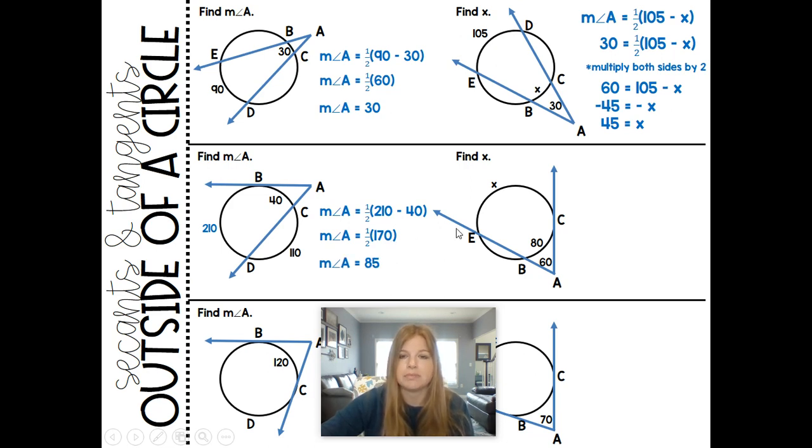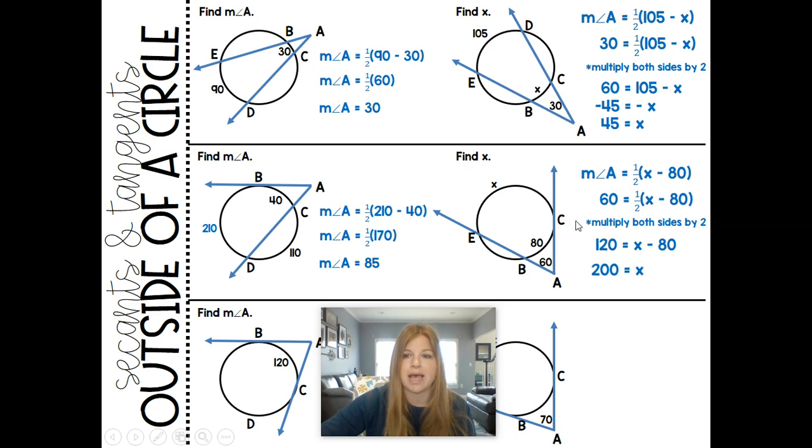Let's go ahead and find the measure of this outer arc here. If we're told that the exterior angle is 60, the inner arc is 80. So the measure of angle A is equal to one half times x minus 80. We know the measure of angle A is 60. So 60 is equal to one half of x minus 80. Multiply both sides by 2. So we get 120 equals x minus 80. Add 80, and we get 200. So that arc is 200. And it completely checks out. 200 minus 80 is 120. Half of 120 is that 60.